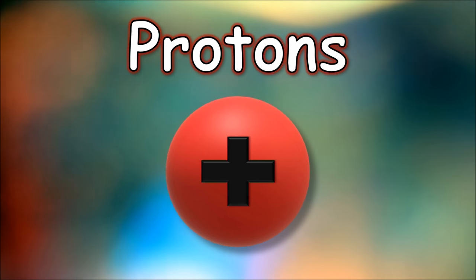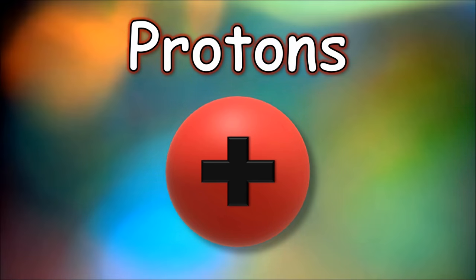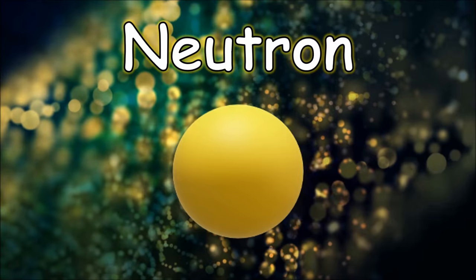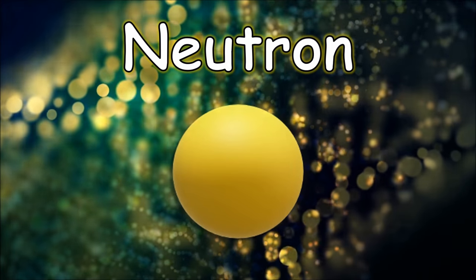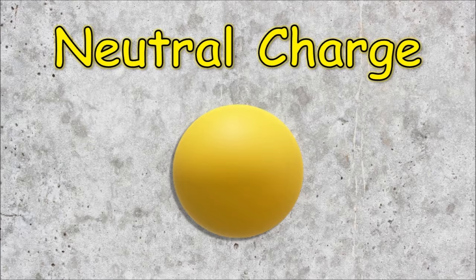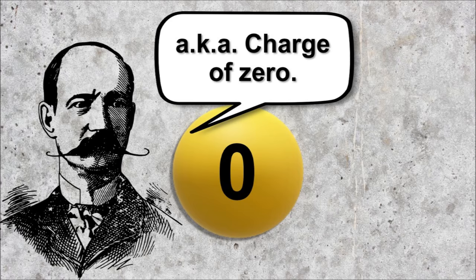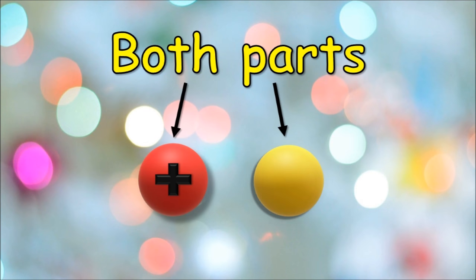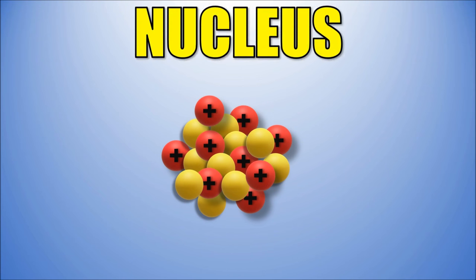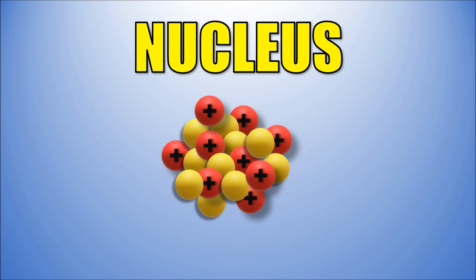So let's talk about protons first. They have a positive charge, like an energy burst. The second part is the Neutrons. It has a neutral charge — a.k.a. a charge of zero. Now both parts that we just discussed hang out in a place called the Nucleus.